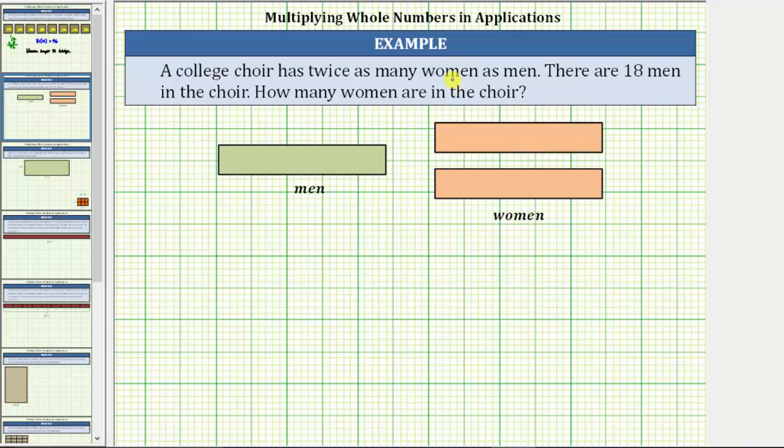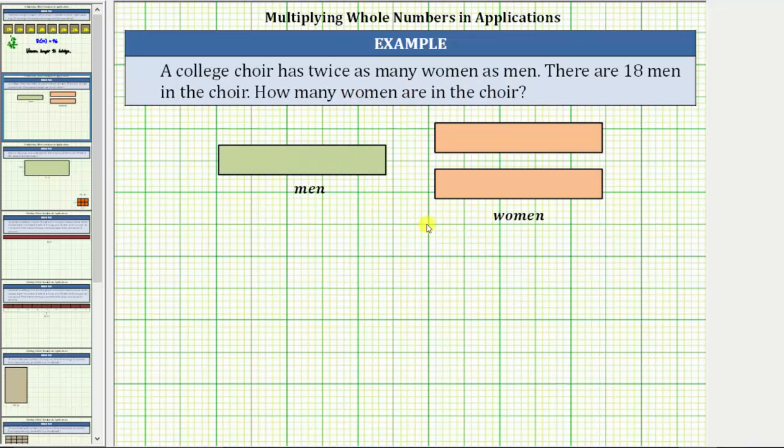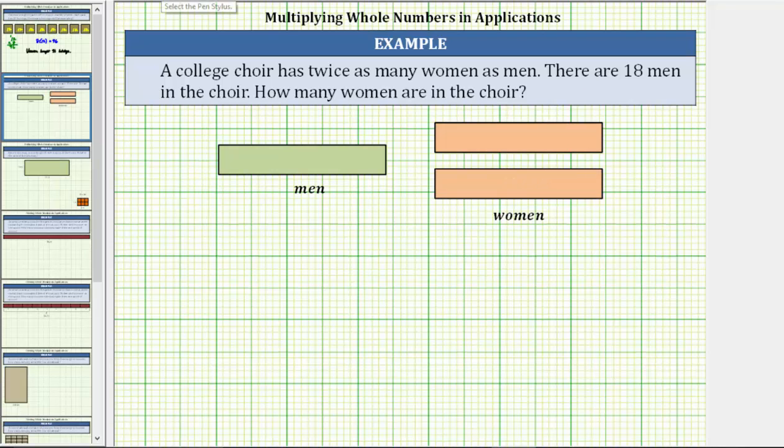We can model the situation by letting this rectangle represent all of the men in the choir. And because there are twice as many women in the choir, there needs to be twice as many rectangles, or two times as many rectangles, to represent the number of women in the choir as we see here. From here, because there are 18 men in the choir, there would be 18 men here. Because there are twice as many women, there would be 18 women here as well as here.